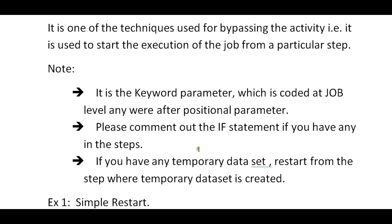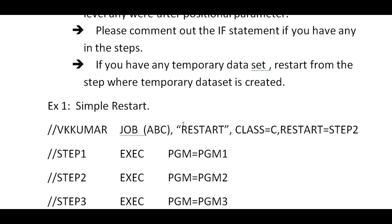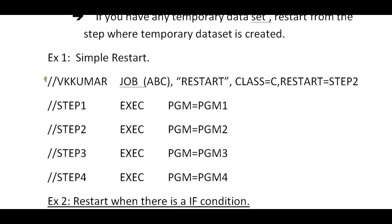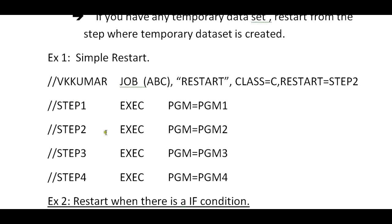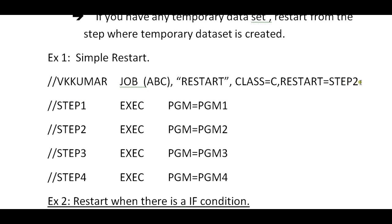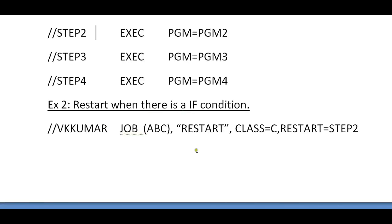Let's look at examples of restart. You have your job card and four steps. You want to skip the first three steps and execute from the fourth step. You simply type 'RESTART=STEP2' — for instance, if you want to skip step one and restart from step two, it will skip step one and execute from step two. This is a simple restart example.